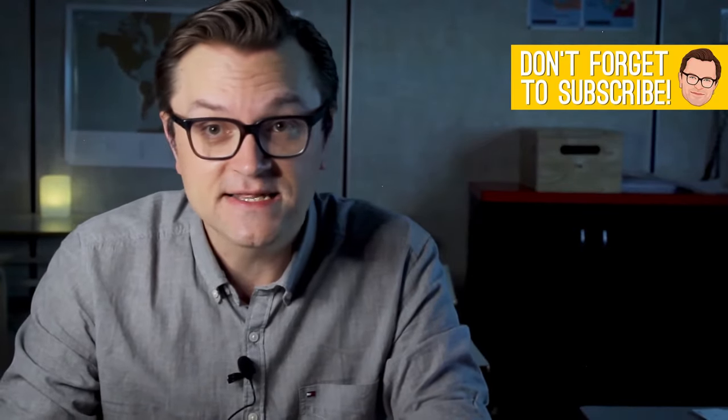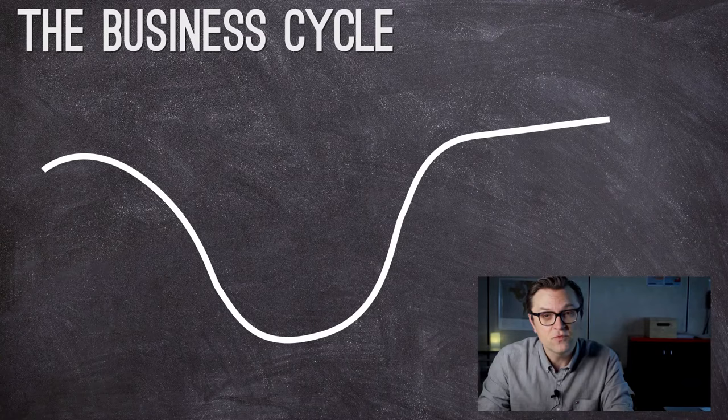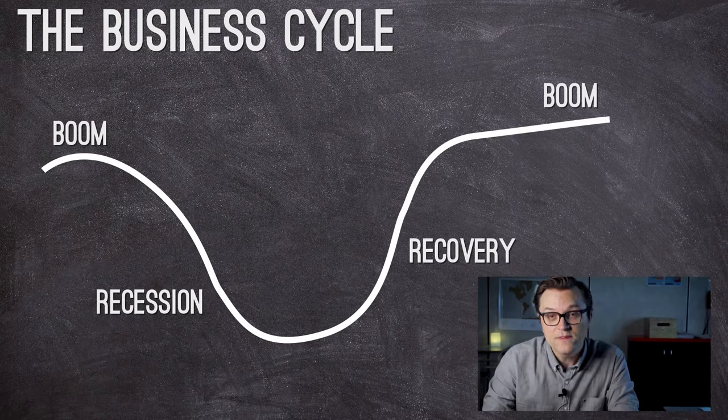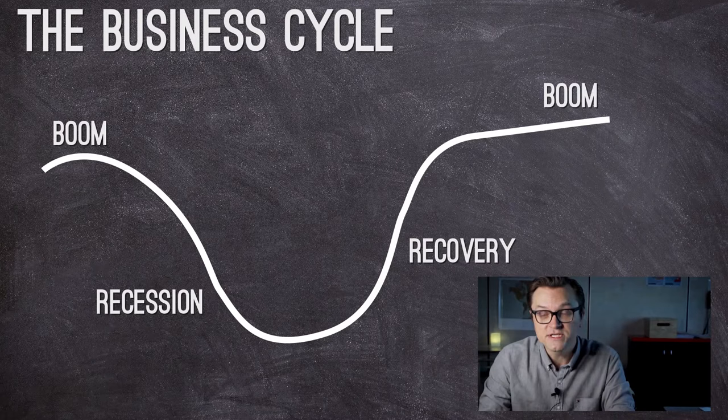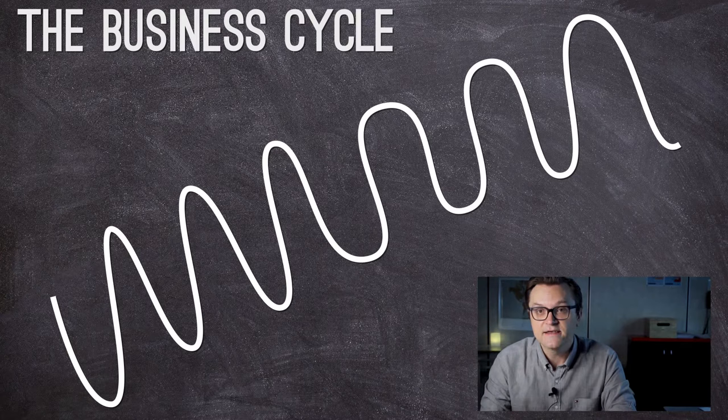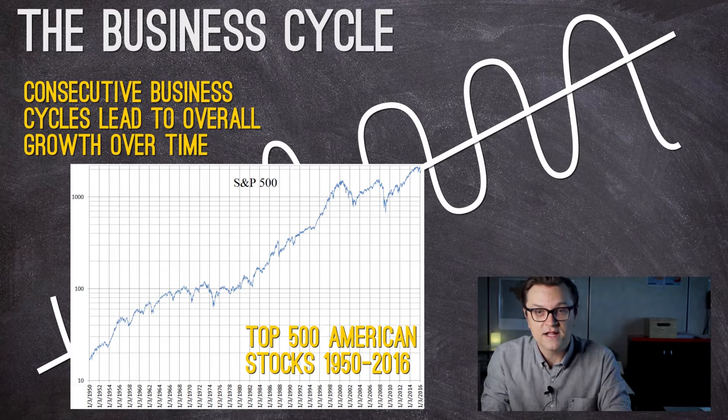Before we get into the details of Keynesian economic theory, let's talk more generally about the business cycle in a capitalist economy. Generally speaking, over time, we've learned that a capitalist economy goes through cycles of periods of growth and periods of economic contraction, which we call recessions. These cycles continue on, but the general trend is upward. The global economy has seen tremendous growth over the last couple of hundred years, but it goes through these periods of boom and bust.